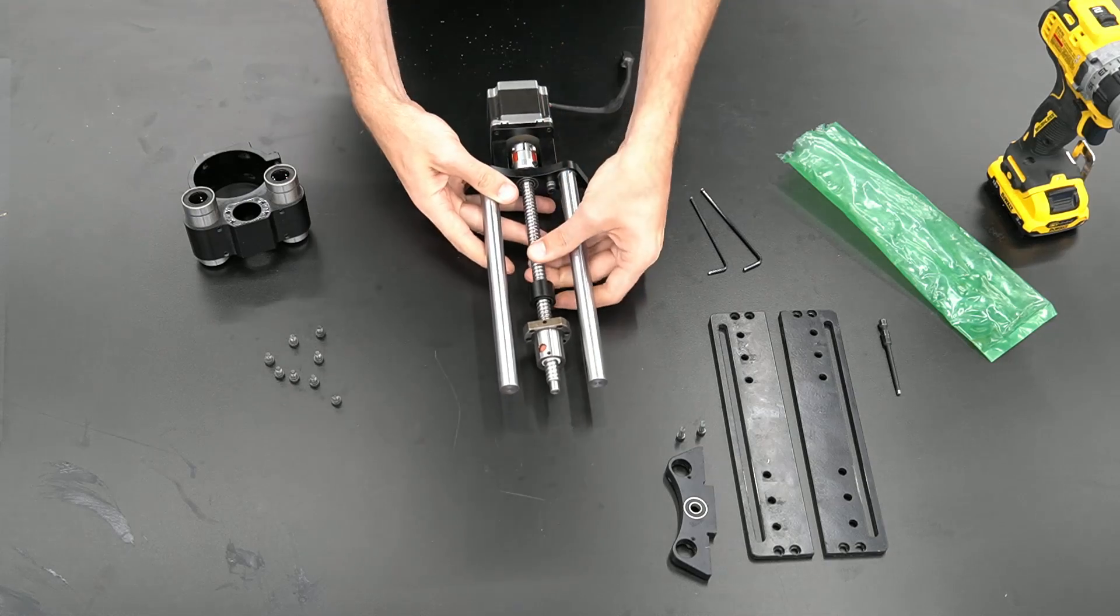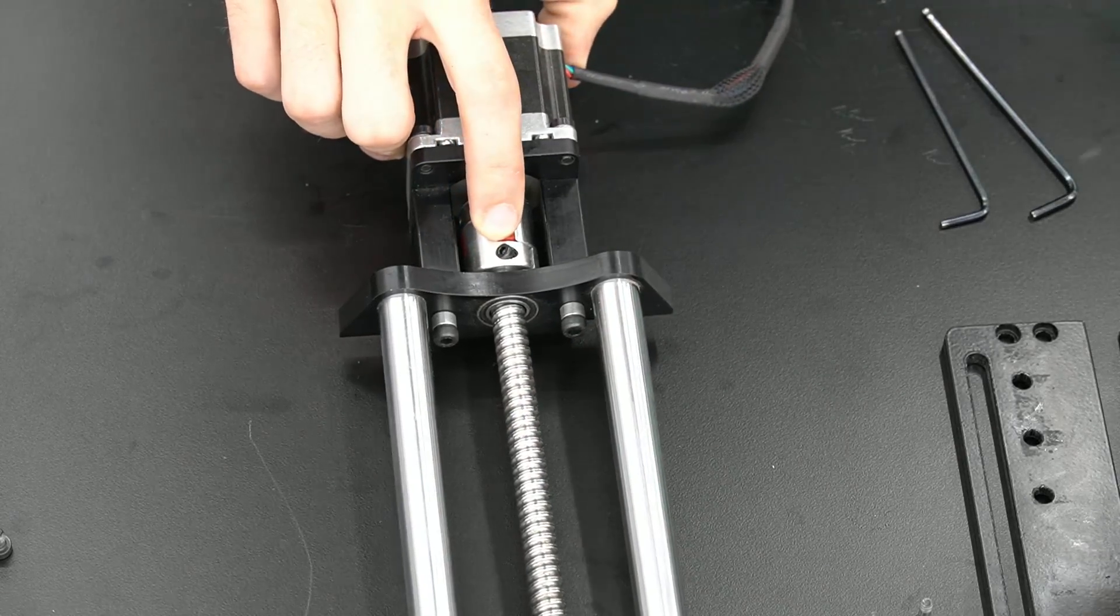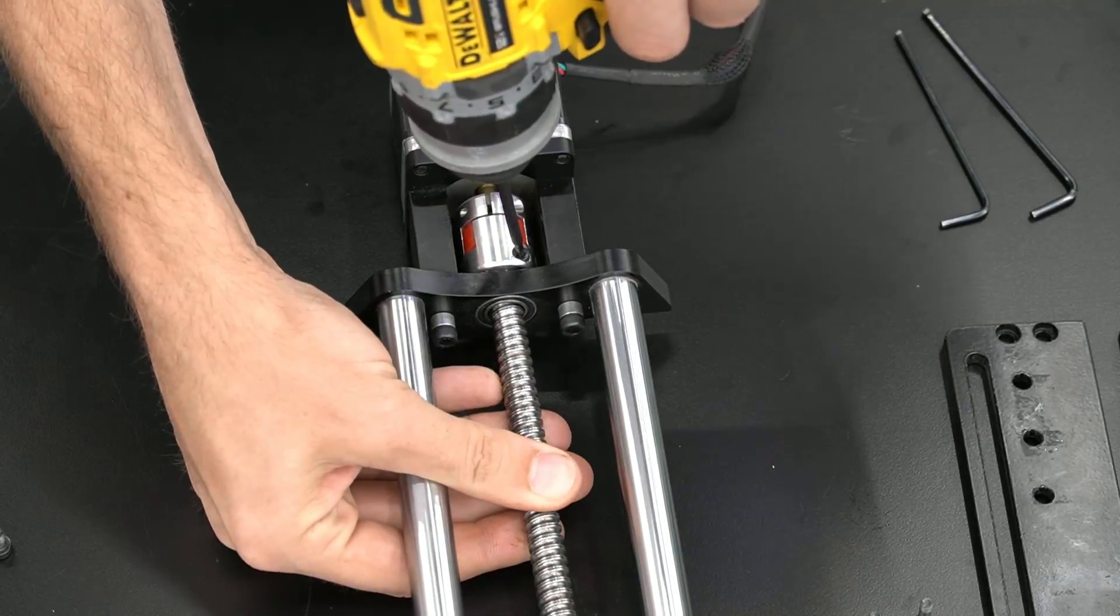We can now insert the new ball screw into the coupler and we will tighten down the set screw on the bottom side of the coupler.